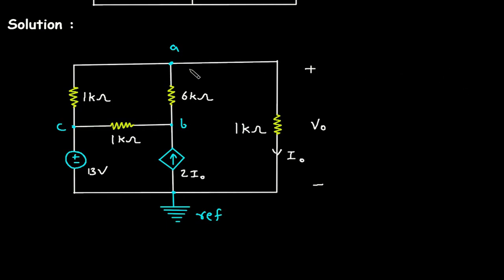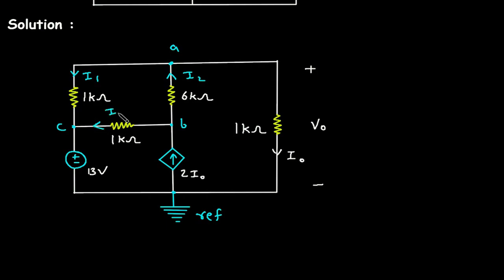Now, what we will do? We will assign the directions of current. So first of all, let's say this current is I1, this current is I2, this current is I3, and this current is IO already.